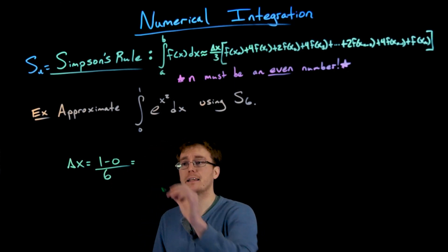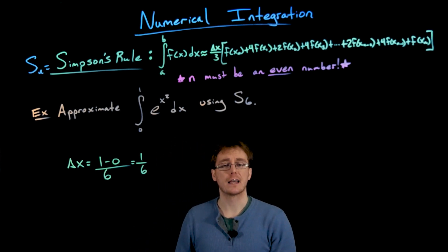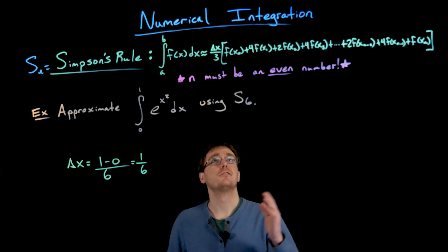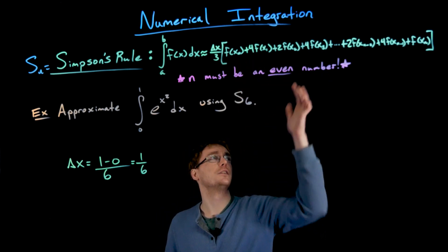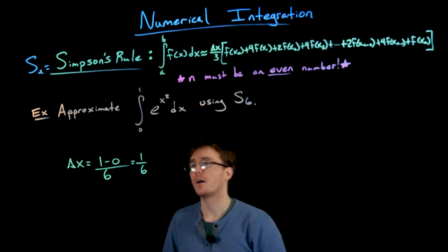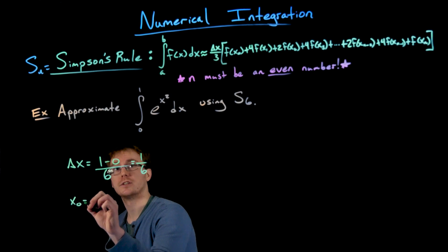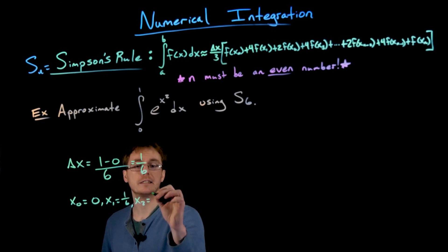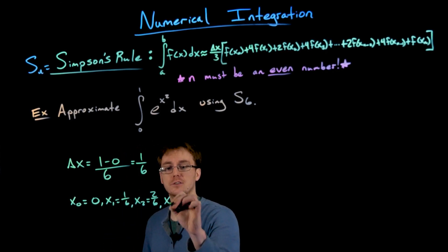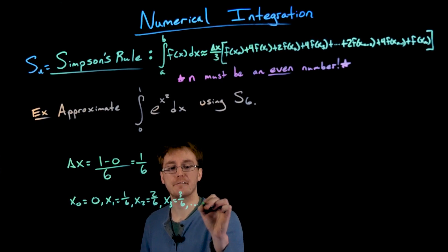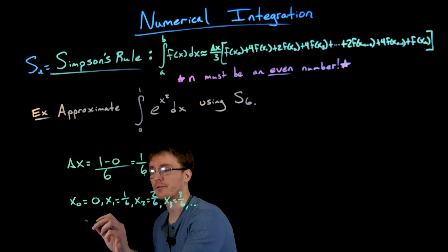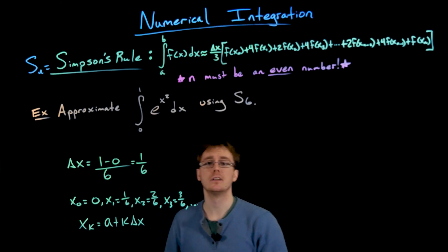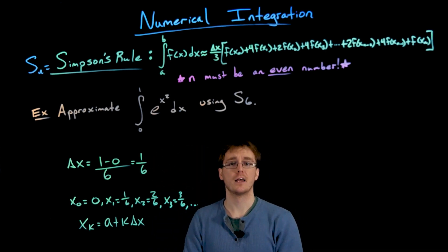Our first endpoint x₀ will be our lower limit of integration, which is zero. Then x₁ will be one-sixth, x₂ will be two-sixths or one-third, x₃ will be three-sixths or one-half, and so on. We can also always use the formula that x sub k equals a plus k times delta x to quickly generate our subinterval endpoints. Now we have all our setup work done — it's just a matter of plugging everything into the Simpson's rule formula.